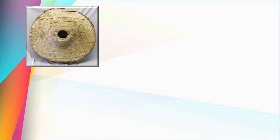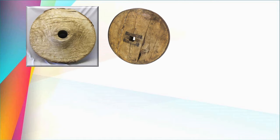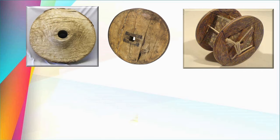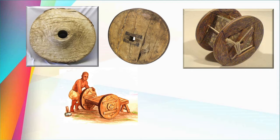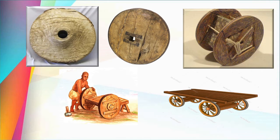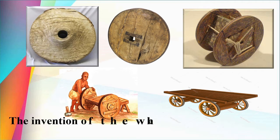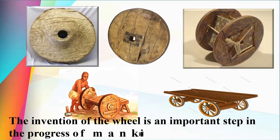Later, the wheel was invented — first a heavy wooden wheel. By attaching wheels to a plank, the speed of transport increased. Here you can see a wheel with spokes — a lighter wheel, also made of wood. Because of these spokes, the wheel became lighter and was attached to planks to carry heavy loads. The invention of the wheel is an important step in the progress of mankind.